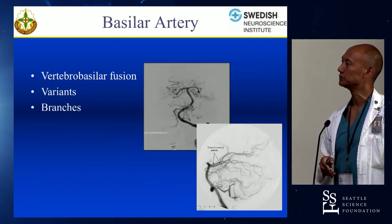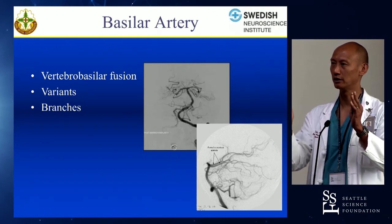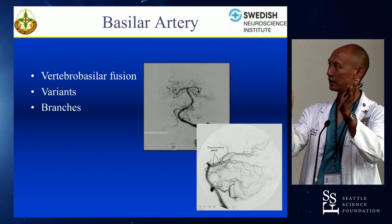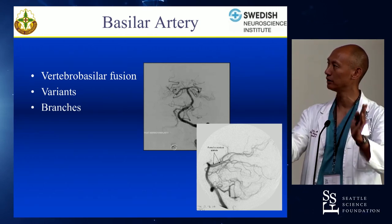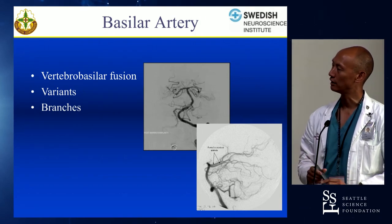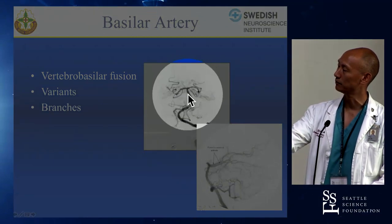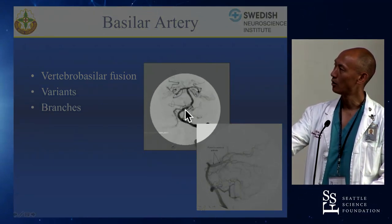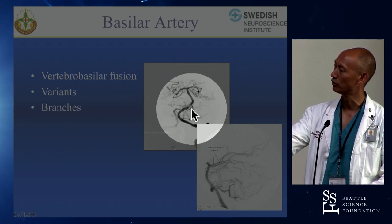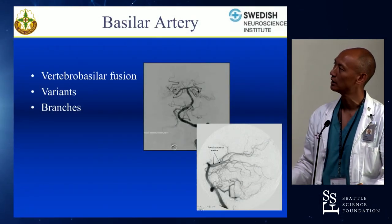Vertebrobasilar fusion: think of it as a zipper. You have two parallel basilar arteries, and normal fusion results in the vertebrobasilar artery superiorly fusing all the way down, leaving the two vertebral arteries. If it doesn't fuse properly, you can either have a low-riding vertebrobasilar, or because of that incomplete fusion, you can observe multiple areas of fenestrations — which are incomplete fusions of the vertebrals together.